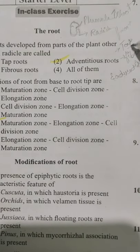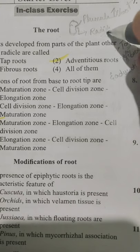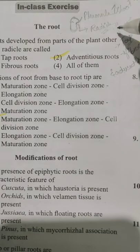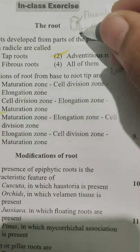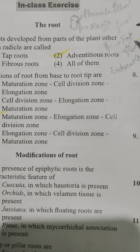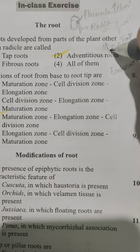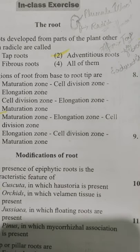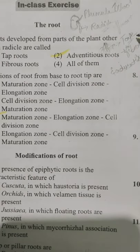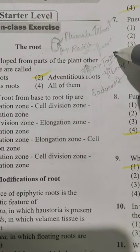In tap roots, the radicle elongates and becomes more prominent — this is called the primary root. It undergoes branching to form secondary roots and further branches to form tertiary roots. The primary root together with its branches is called the tap root, usually seen in dicots.